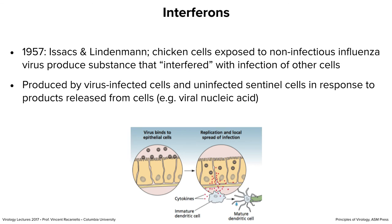For many years no one understood how interferons worked. We knew they were proteins, and different cells made different sorts. We had no clue how they worked until around the time toll-like receptors were discovered, and then we started looking for receptors on the cell surface. These proteins are made by virus-infected cells and also by uninfected sentinel cells — macrophages, dendritic cells, NK cells — when they pick up apoptotic bodies containing viral nucleic acid or protein. They respond by making interferons as well as other cytokines.